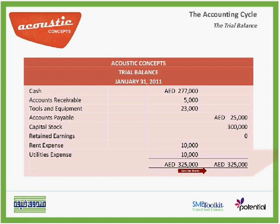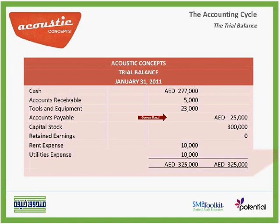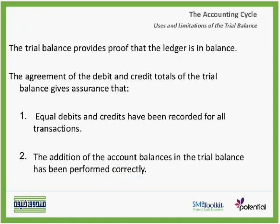A trial balance, as you see, has two columns — one on the debit side and one on the credit side. This is a sample of a trial balance that we will see later on in more detail. The trial balance is just a proof that the ledger is in balance.